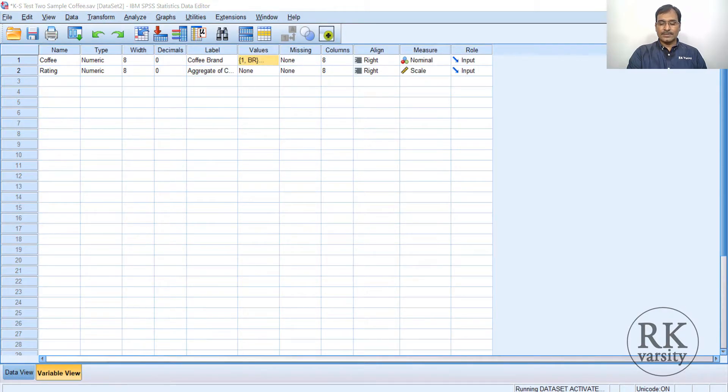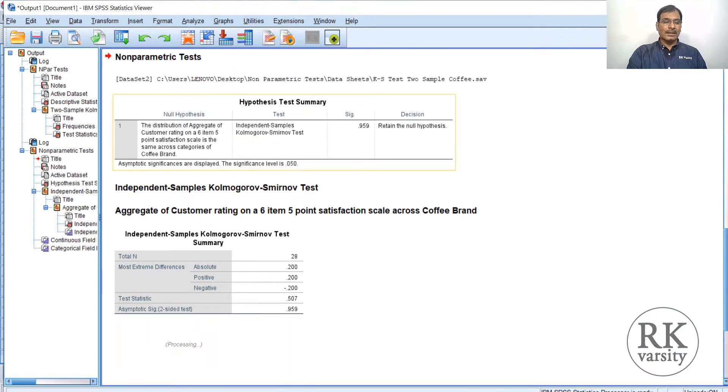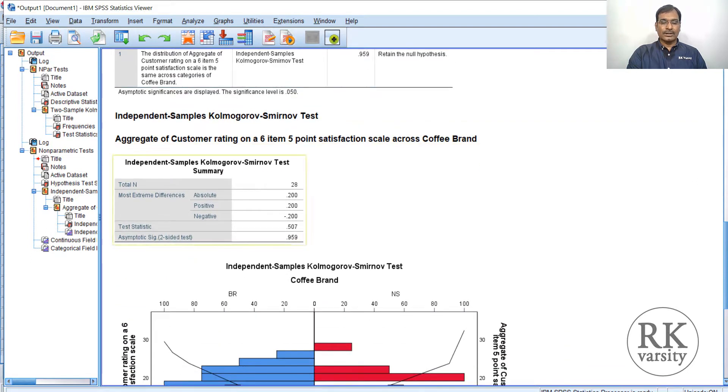The result is presented in an output document. Here is the output. The output results indicate the hypothesis test summary. The distribution of aggregate of items scale is the same across categories of coffee brand. Independent samples Kolmogorov-Smirnov test has been conducted, and the significance value is 0.95. Retain the null hypothesis. The hypothesis test summary minimizes your burden of interpreting the result. It directly gives you retain the null hypothesis, which means we fail to reject the null hypothesis. Here are the test values.